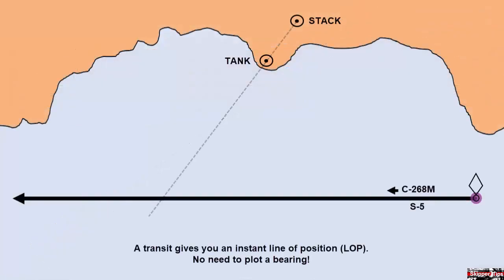Find your position without the need to plot bearings. When two charted objects line up, draw a line between those two objects and extend it out past your track line. This will show your exact position without the need to use a compass rose or protractor.